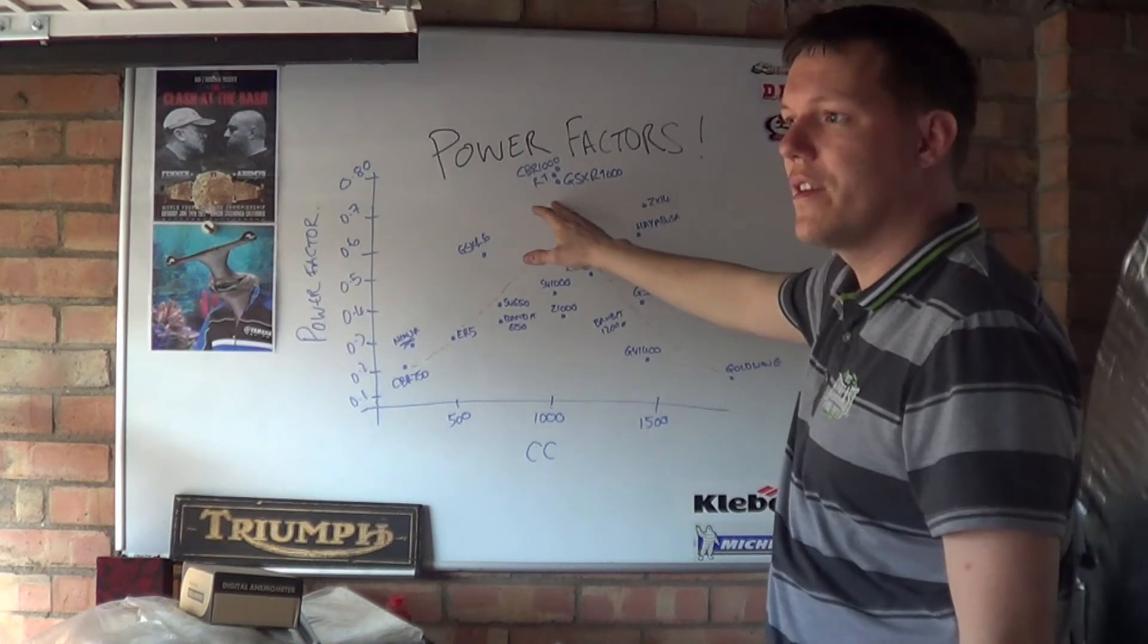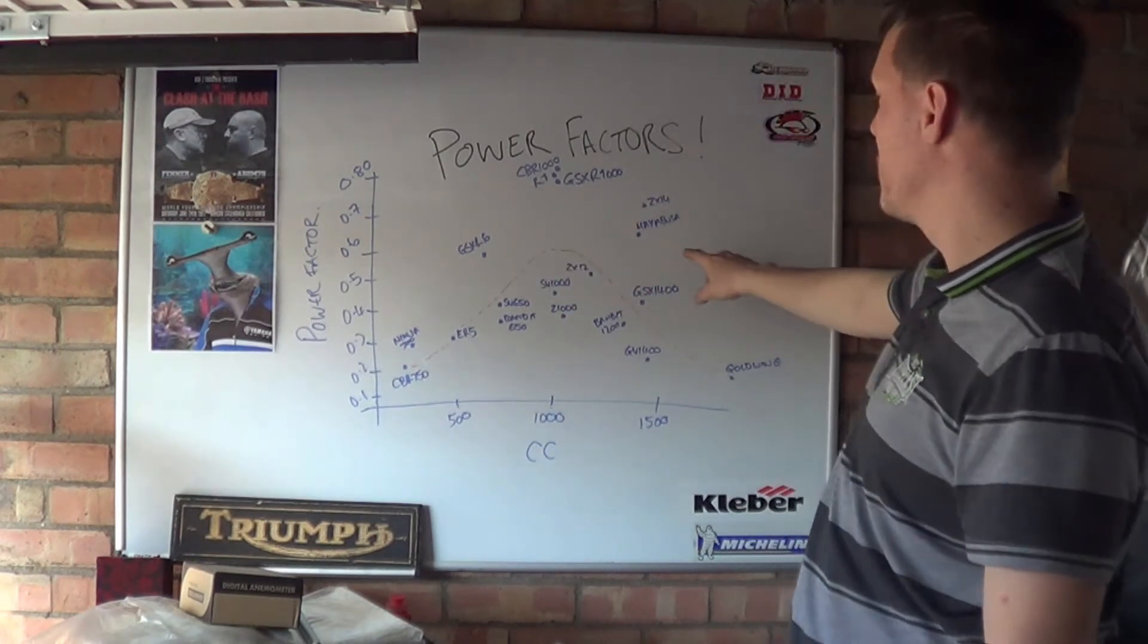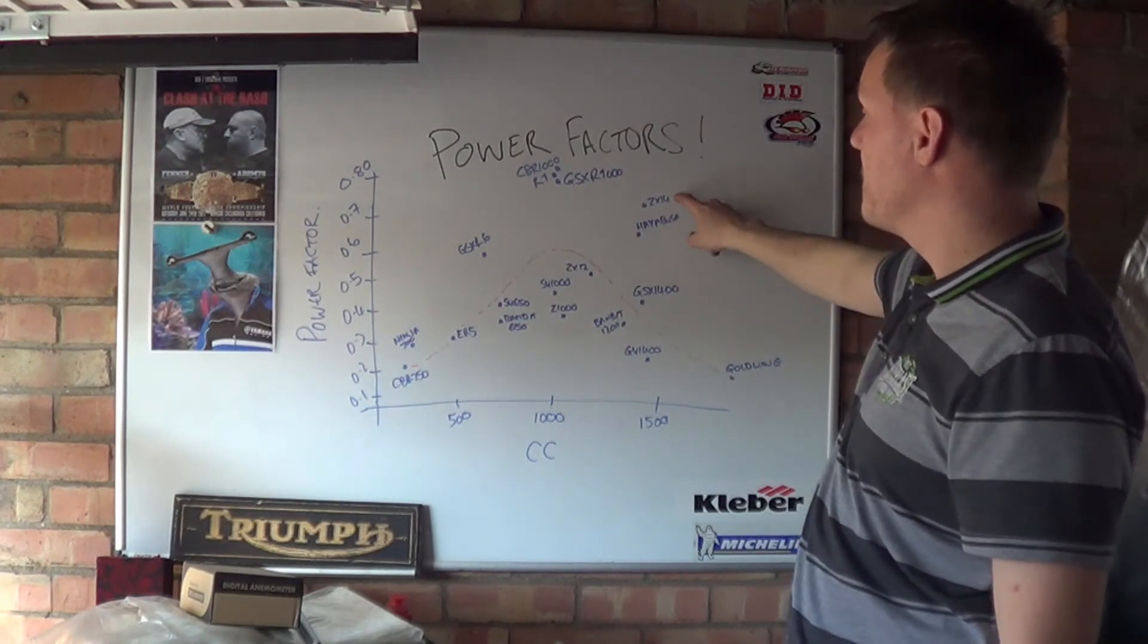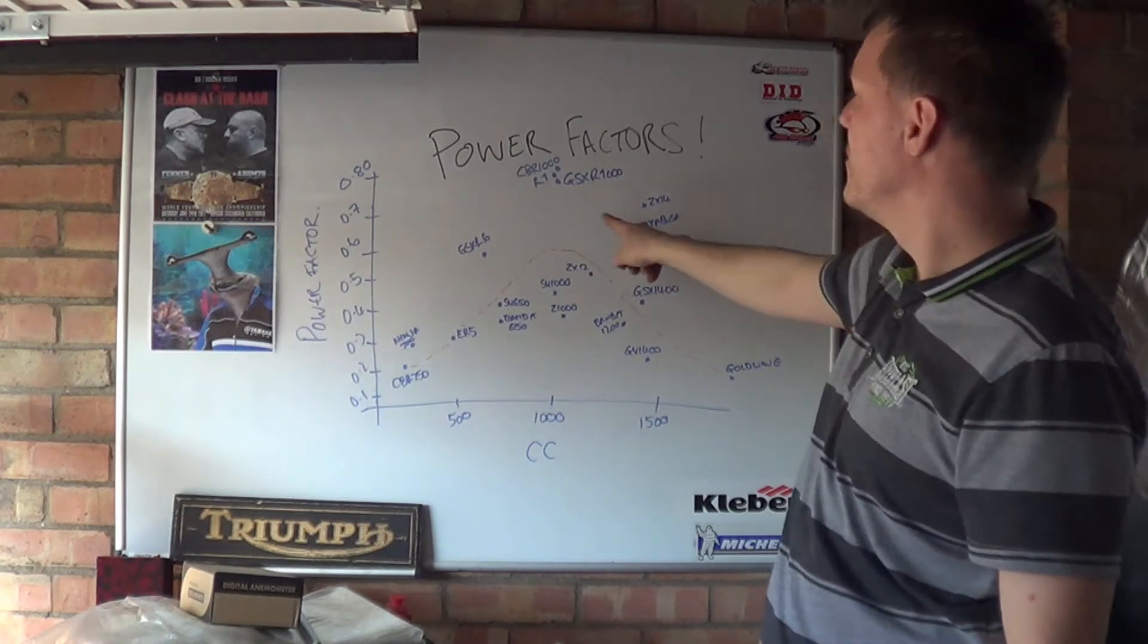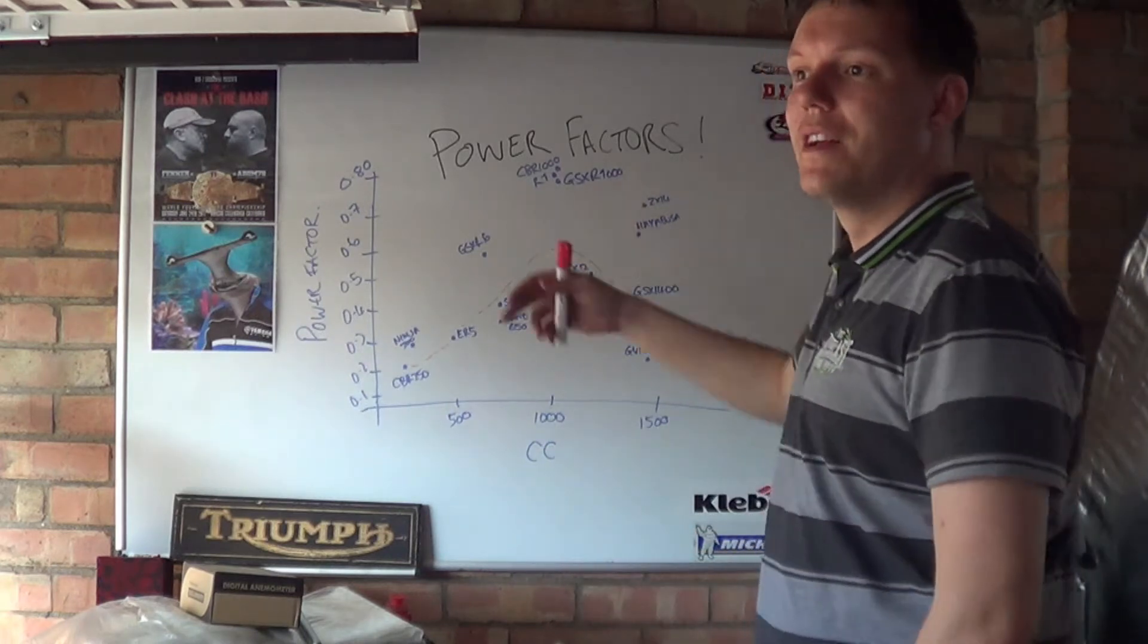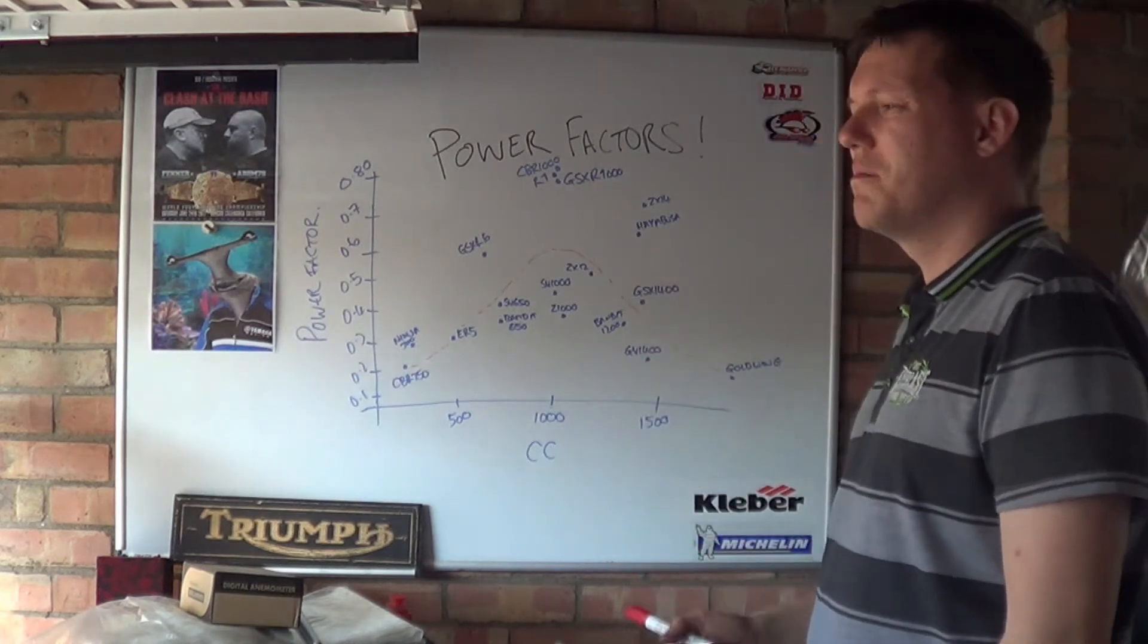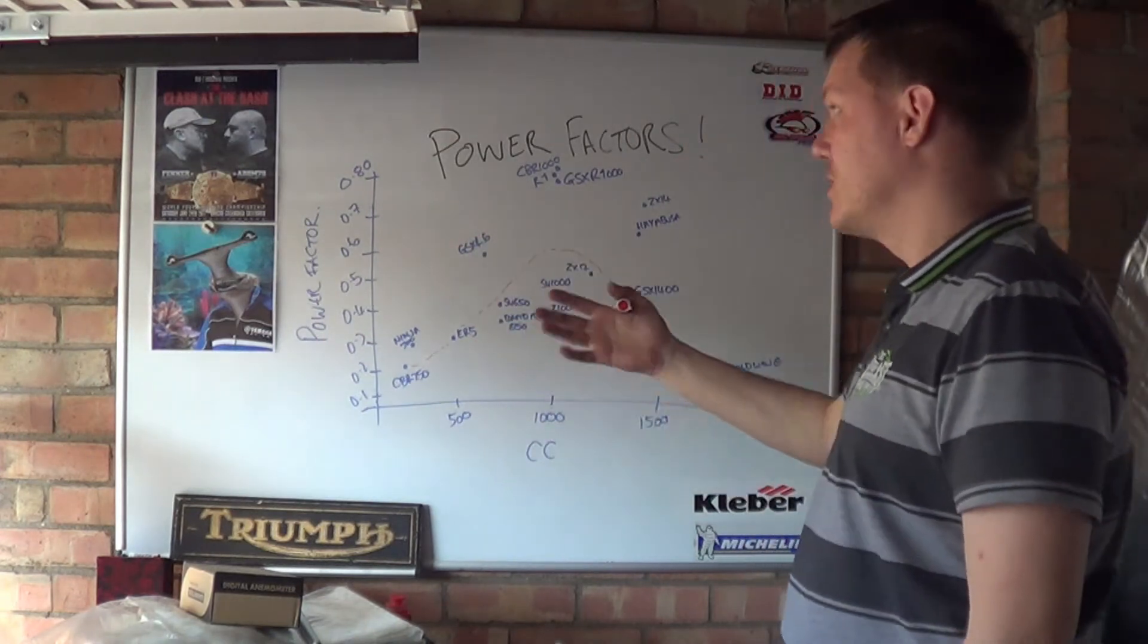But it is quite interesting that these have such a high power factor compared to the other ones. Because Hayabusa and a ZX-1400, they sit here. Not as high as these do. And it's because the 1400 bikes, although they have more power, they weigh a hell of a lot more. A ZX-14 weighs shit loads. And so they have a power factor of about 0.7.